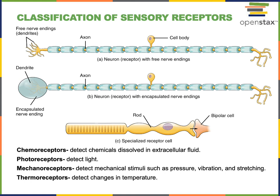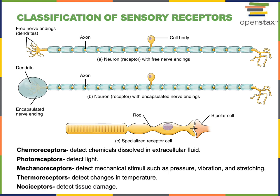Thermoreceptors respond to changes in temperature and are widely distributed throughout the body, with many thermoreceptors found in the skin as free nerve endings that respond to changes in skin temperature. The last functional class of sensory receptors are nociceptors, which detect tissue damage producing the perception we commonly refer to as pain. Chemicals released from damaged cells in a tissue activate receptor proteins on the dendrites of free nerve endings to stimulate nociception.